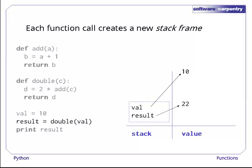Now it's double's turn to return. Its result, 22, is assigned to result, and double's stack frame is discarded. The program can finally print the result of this sequence of calls.